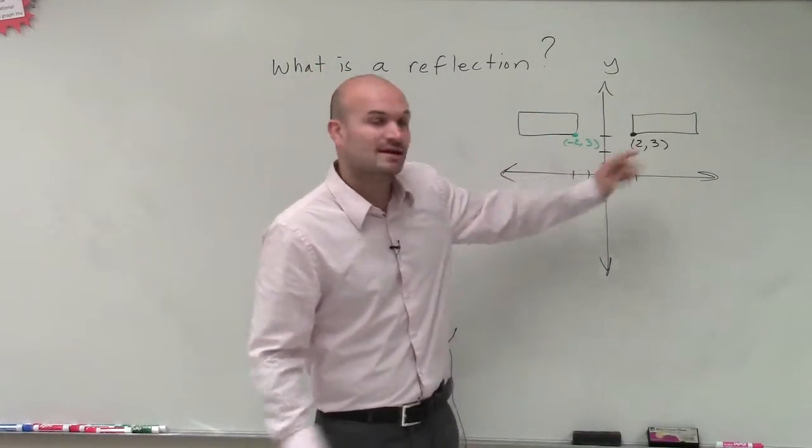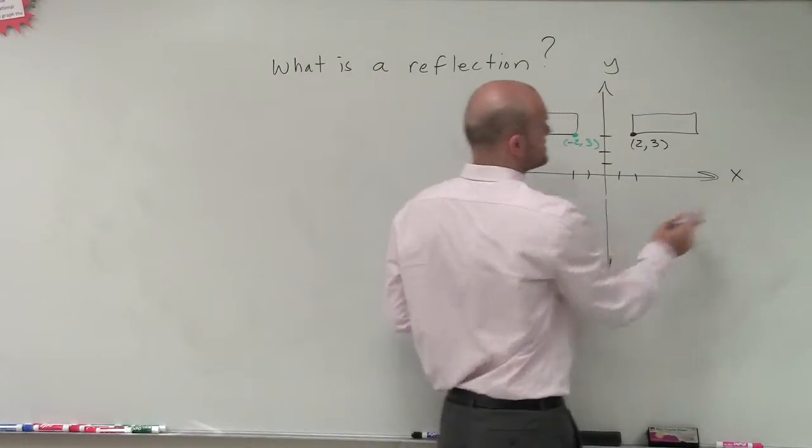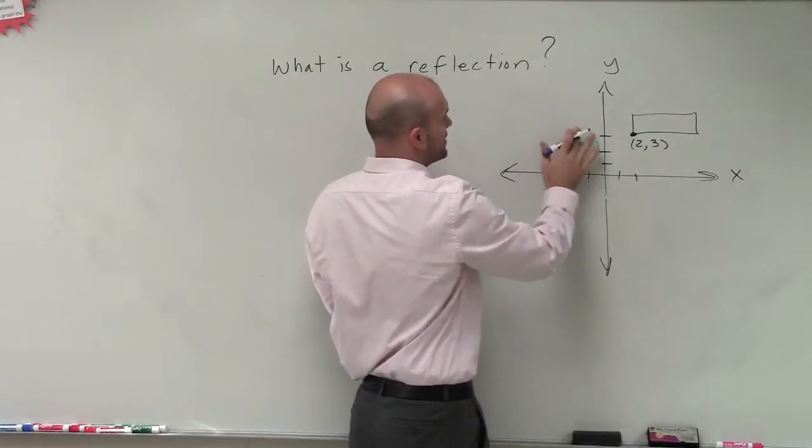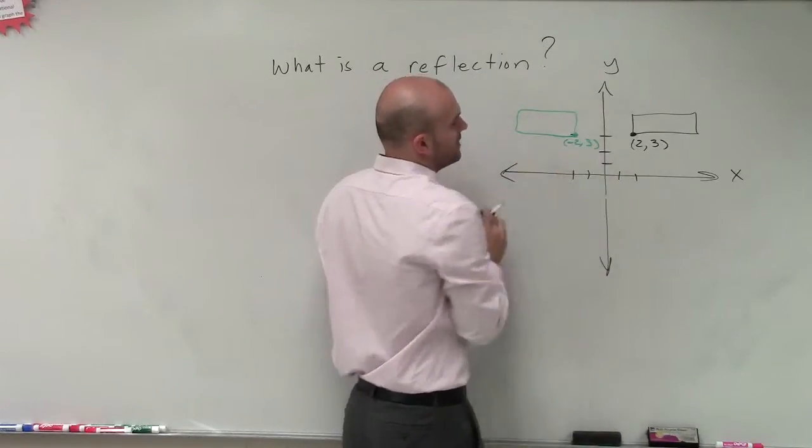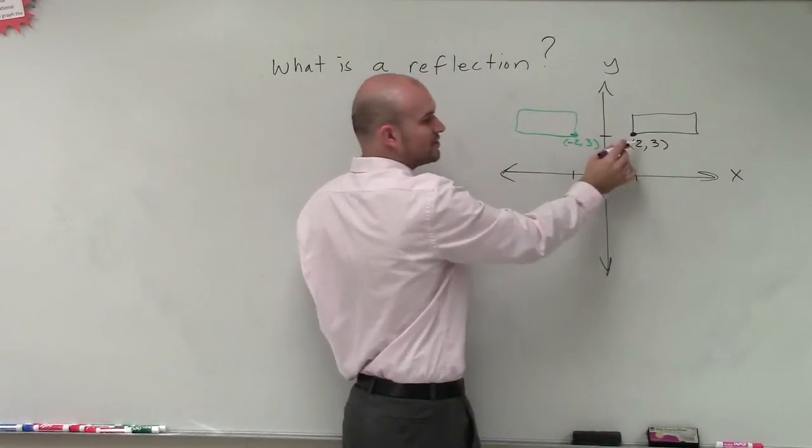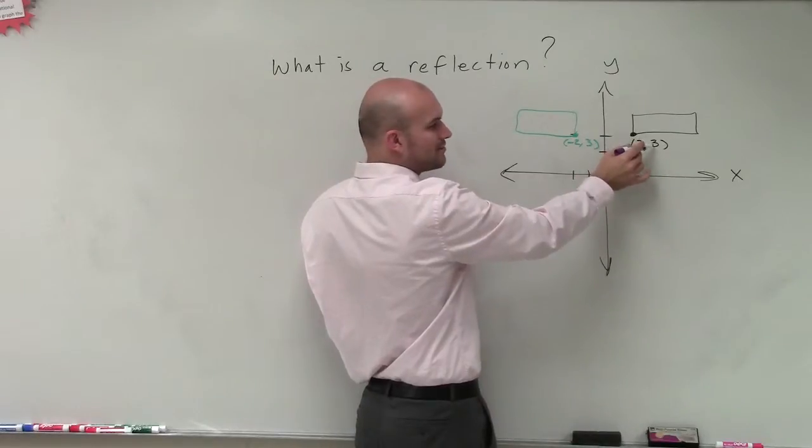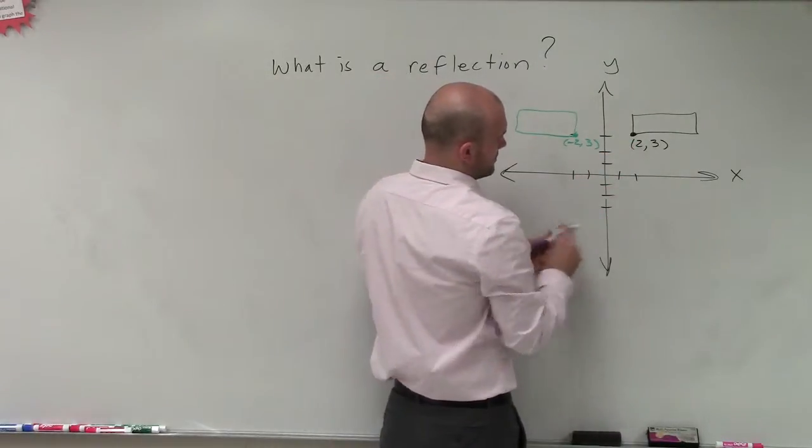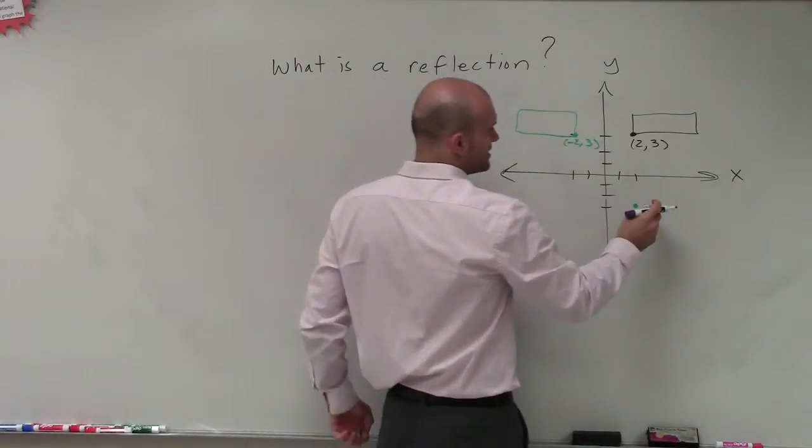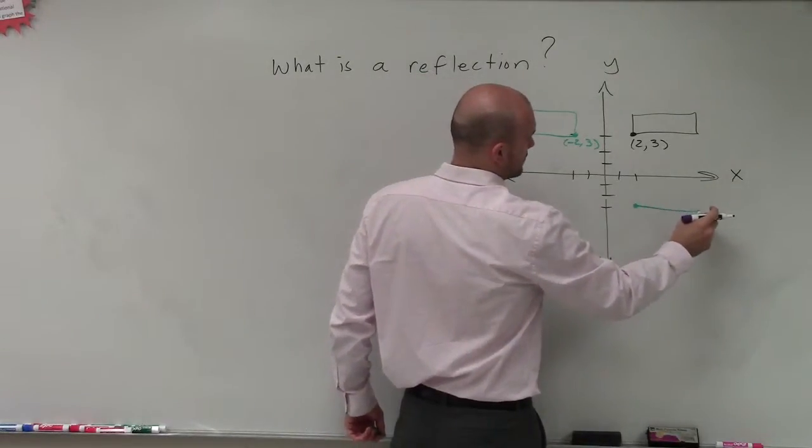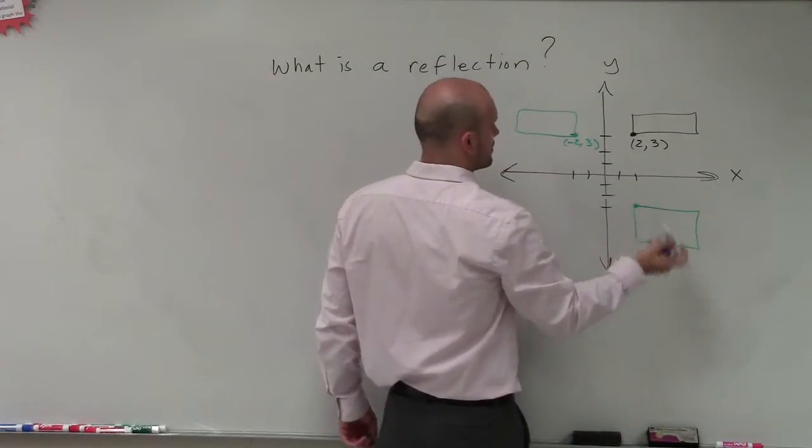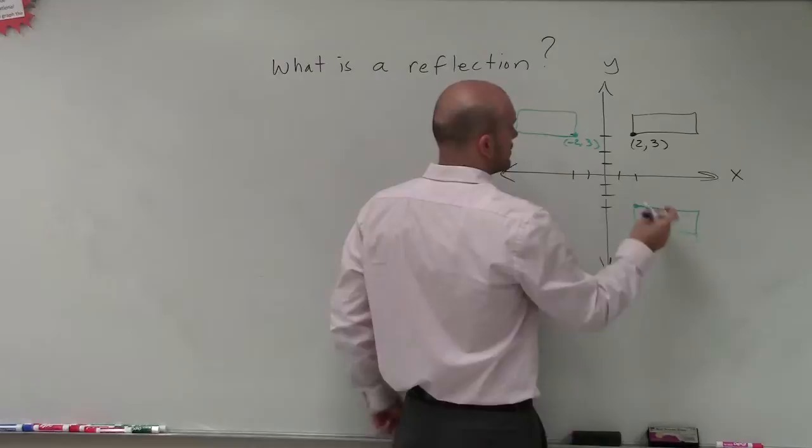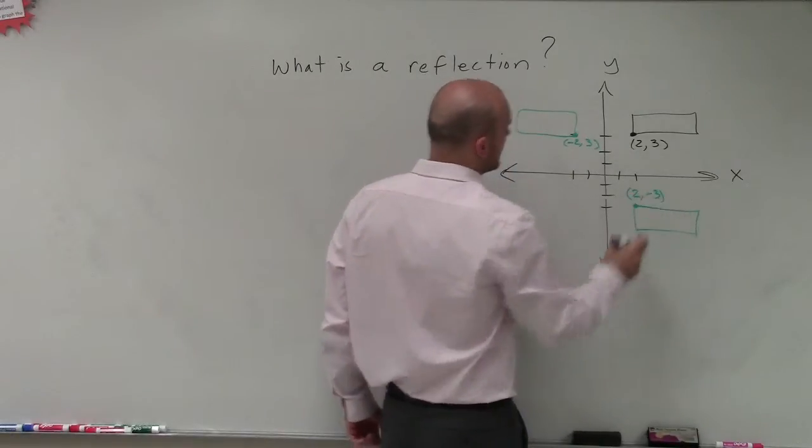So now, what if I said let's reflect it over the x-axis? Then this whole graph is now going to be reflected. Now the 2 would still be positive, but now my 3 would be negative: 1, 2, 3. And then you could see something like that. So this would be now 2, negative 3.